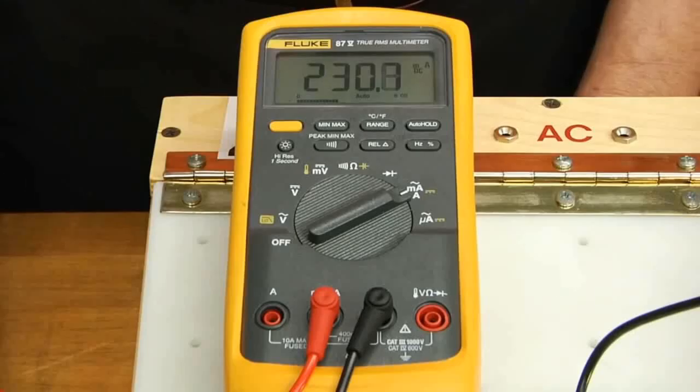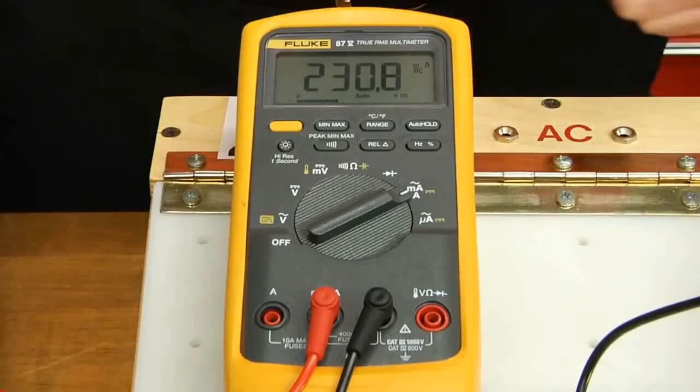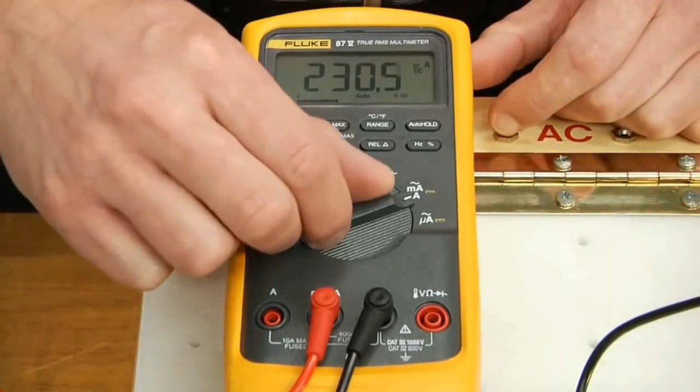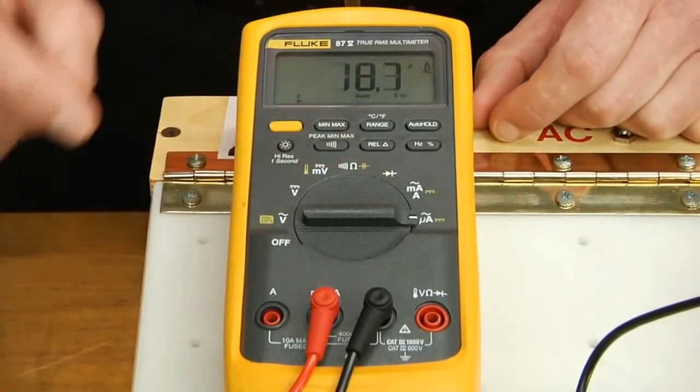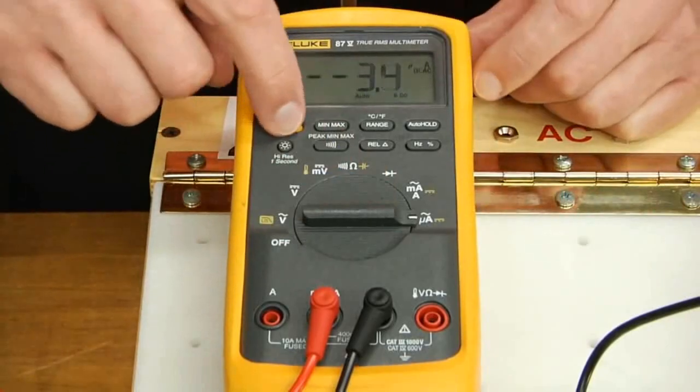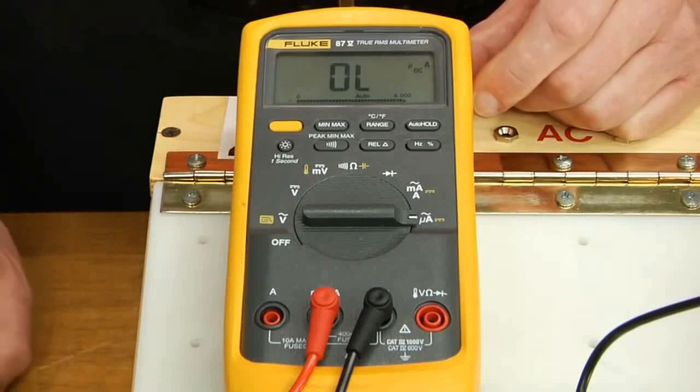For amperage readings below 1 milliamp, you can use the microamp setting on the meter. Simply turn the knob to the microamp setting. You will probably also need to change your function from AC back to DC, and then you can read microamps.